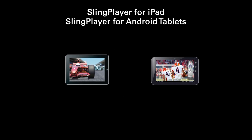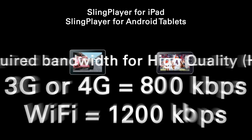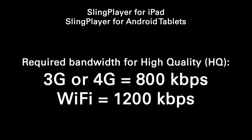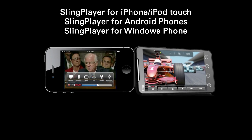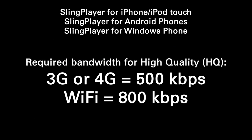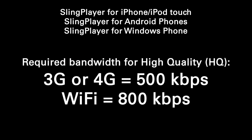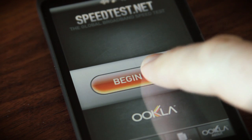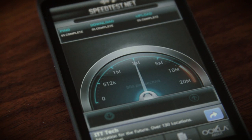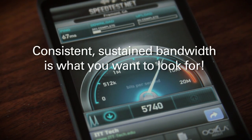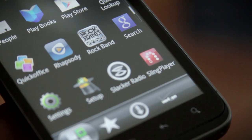If you're using SlingPlayer for iPad or SlingPlayer for Android tablets, here are the minimum bandwidth values you need to have available if you want high quality video. And here are the network bandwidth requirements for SlingPlayer for iPhone, Android phone, or Windows Phone 7. So if you run speedtest and it tells you you have these values or higher, you know that your current mobile network is good to go for high quality video.